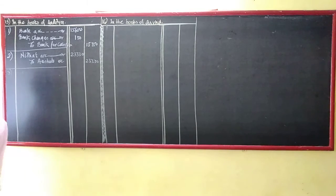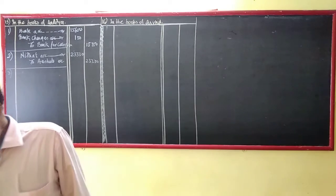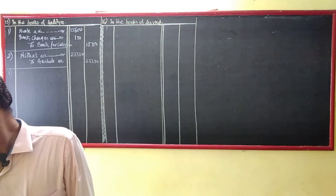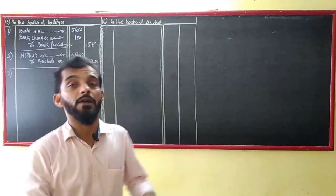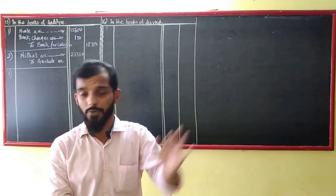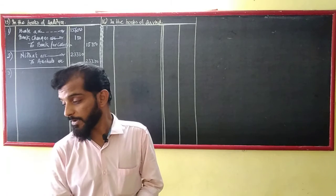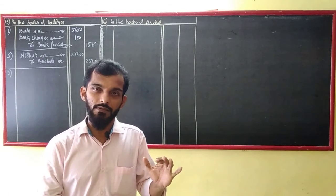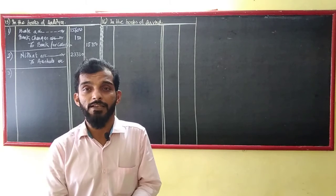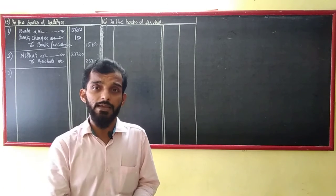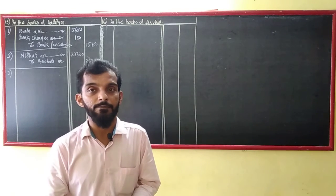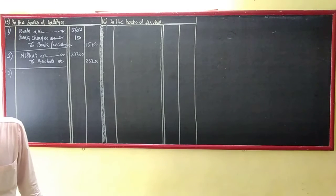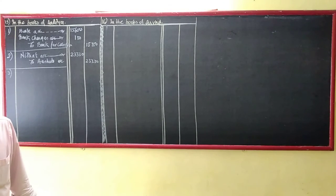Transaction number 3. Bank informed that Jayadip's acceptance of 32,400 which was discounted with bank was dishonored. Noting charges paid by bank 460. Jayadip's acceptance was discounted and bank paid for it. That is why the bank charged 32,400 plus 460, which is 32,860. So, Jayadip's account debit to bank account 32,860.